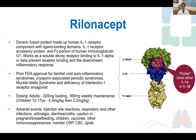Previously, Rilonacept was FDA-approved for several rare inflammatory conditions. The dosing in adults is a 320 milligram loading dose followed by 160 milligram subcutaneous weekly doses. Some adverse events and cautions are shown on the screen.